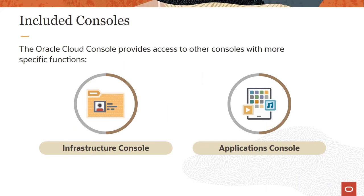If you have Application Cloud subscriptions, you'll use the Applications Console to create service instances — also known as pods — and manage your services there. If you have access to the Infrastructure Console in addition to the Applications Console, then you may need from time to time to switch between them depending on which services you're looking to monitor.